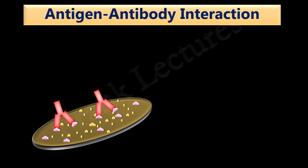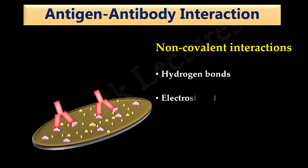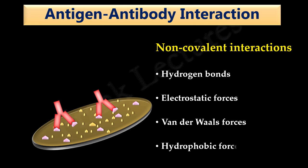Antibodies bind to their specific epitopes. This binding involves chemical interactions which are non-covalent. These forces hold antigen and antibody together once they come into close proximity. These non-covalent interactions include hydrogen bonds, electrostatic forces or ionic bonds, van der Waals forces, and hydrophobic forces.